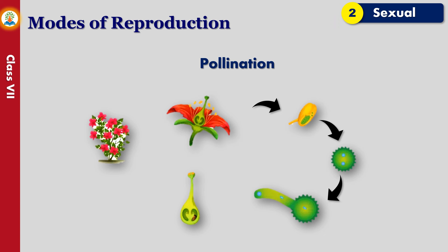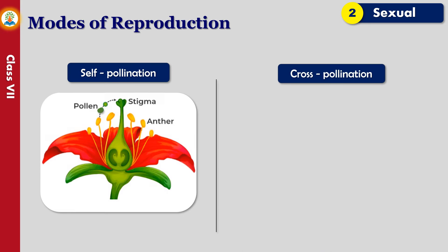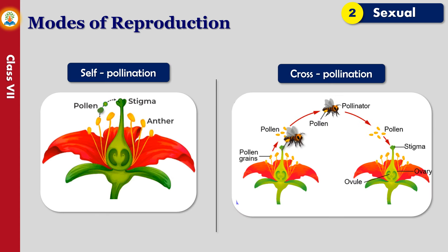When the anthers mature, they burst and release pollen, which gets transferred to the stigma for fertilization. This process is called pollination. In self-pollination, the pollen from the anther gets transferred to the stigma of the same flower; it occurs only in bisexual flowers. In cross-pollination, the pollen from the anther of one flower gets transferred to the stigma of another flower of the same plant or another plant of the same kind. Cross-pollination can take place in both bisexual as well as unisexual flowers.